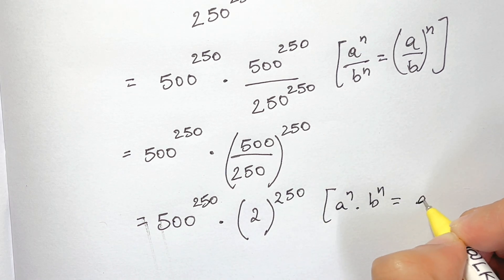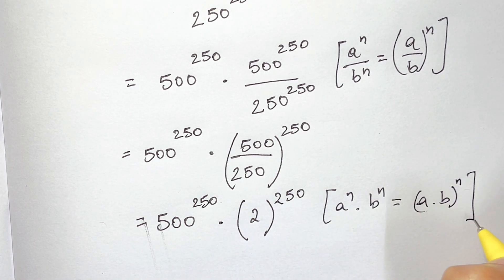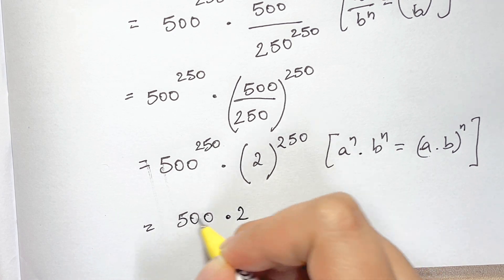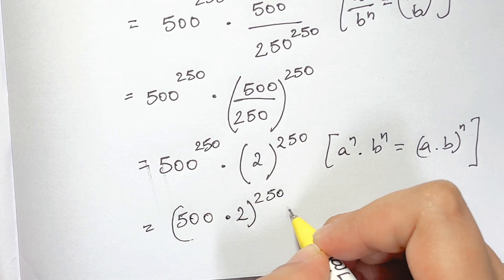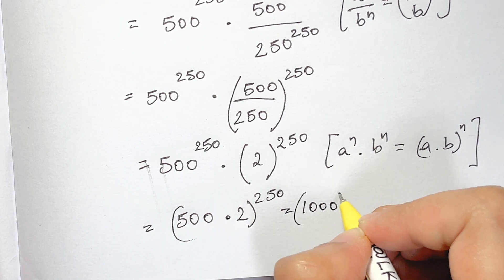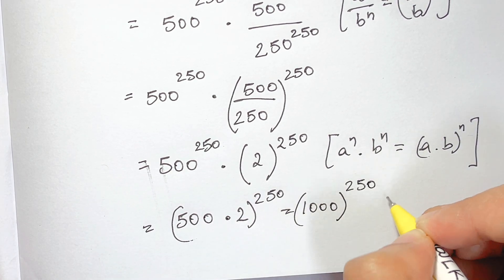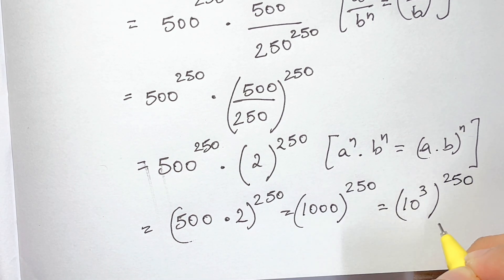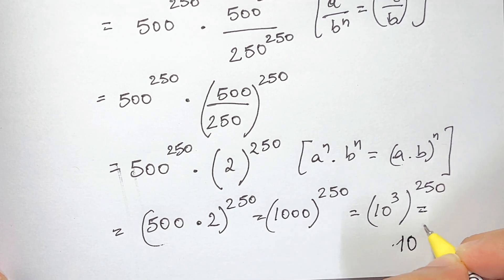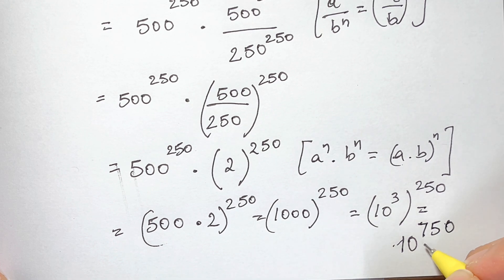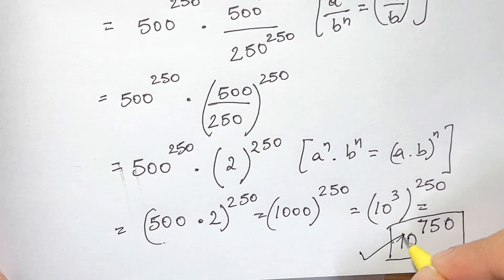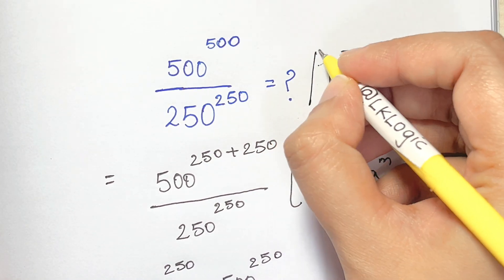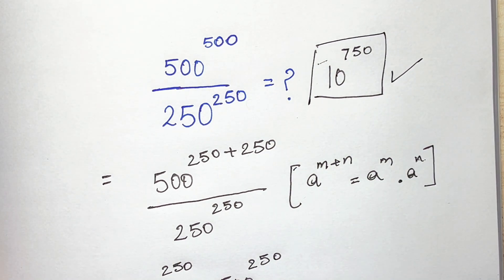Now we use the law: a to the power of n times b to the power of n equals a times b, whole to the power of n. So we get 500 times 2, whole to the power of 250, which equals 1000 to the power of 250. Since 1000 equals 10 cubed, that gives us 10 to the power of 750. That's your answer: 10 to the power of 750. Thank you for watching.